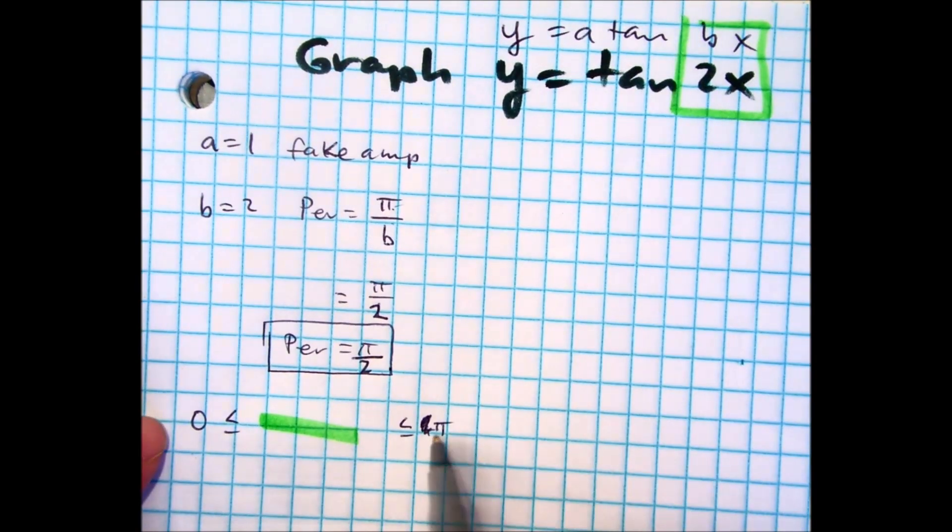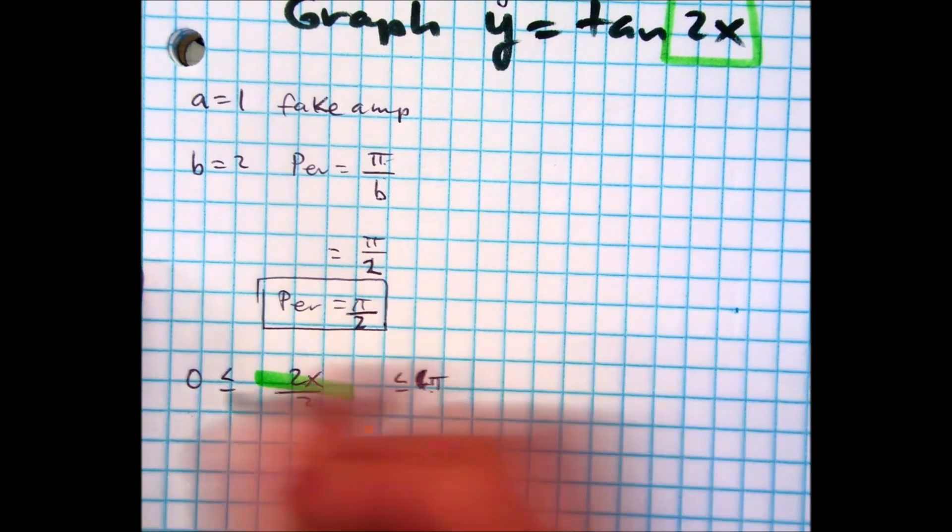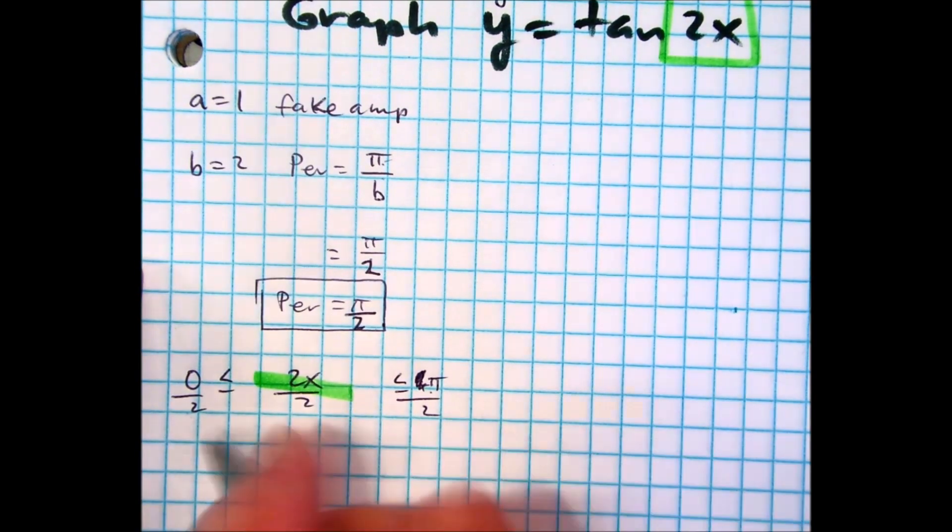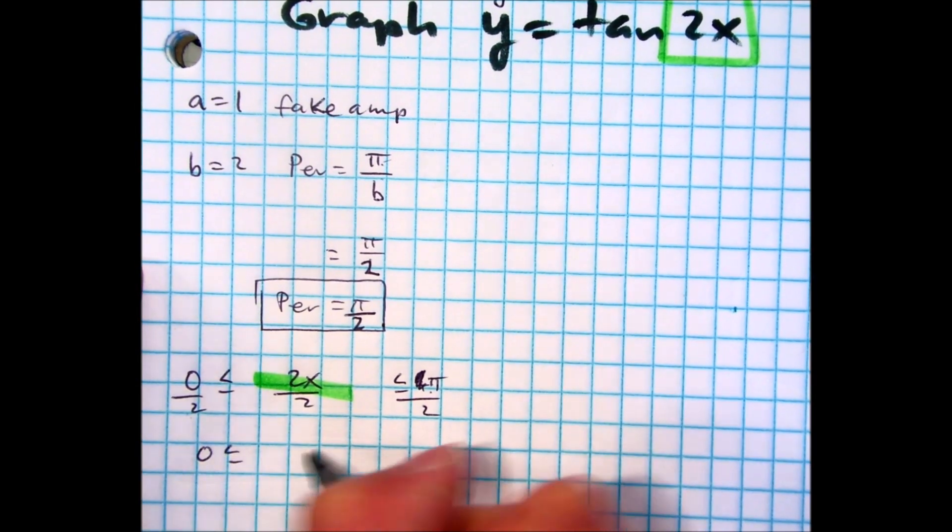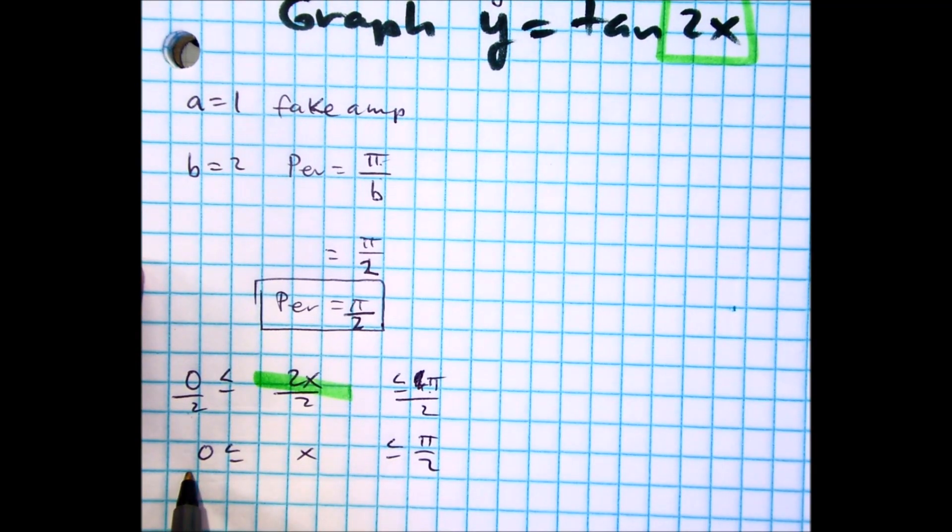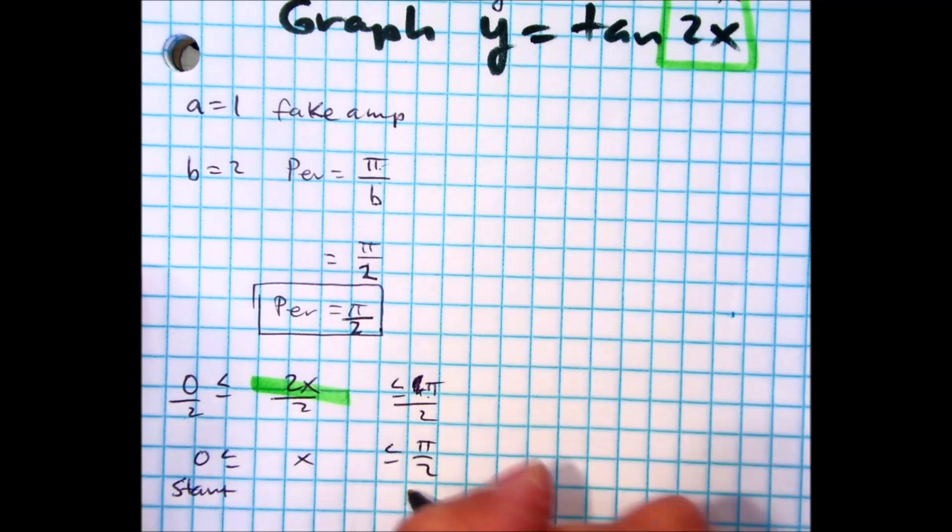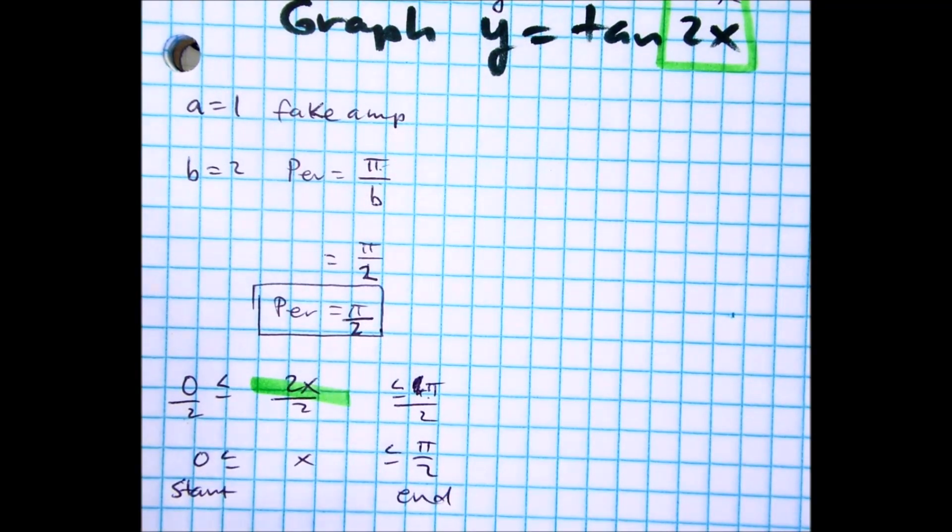It should be between 0 and pi, right? Pi. So there's your 2x. And this helps you explain, if you divide by 2, that means your start will be 0. Let's write that. Start at 0. And you'll end at pi over 2.